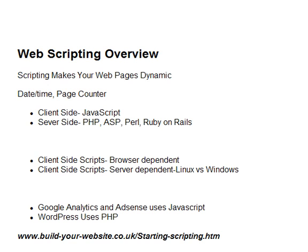Okay, so let's just wrap up the video here with a quick overview. Scripting makes your web pages dynamic. Client-side scripts run on the actual web browser, and the most common one is JavaScript. Server-side scripts run on the web server and they're dependent on the type of web server, with common ones being PHP, Perl, and Ruby on Rails. If you want to find more information about scripting, you can take a look on the website — you can see the URL at the bottom — which goes into more detail on the different scripts, types of scripts, and in particular JavaScript and PHP. Until next time, bye.